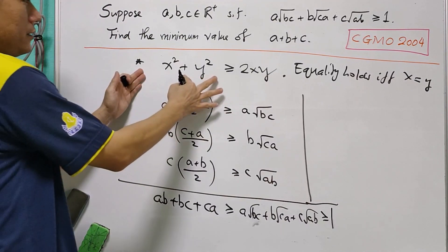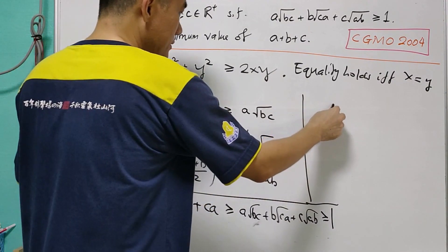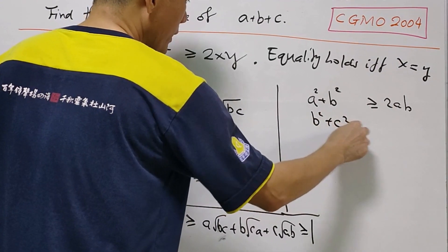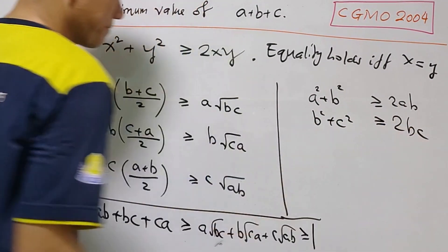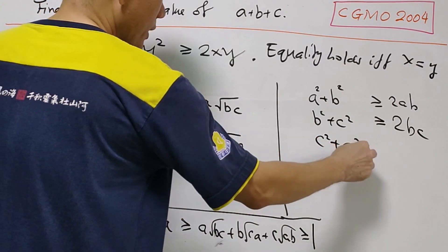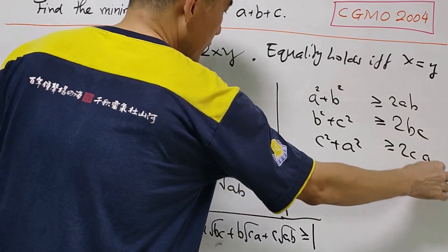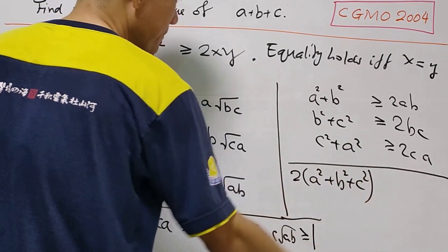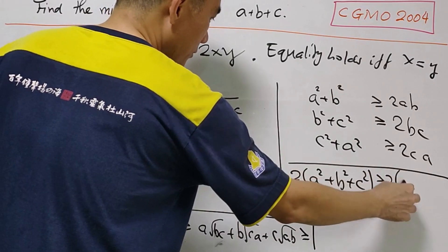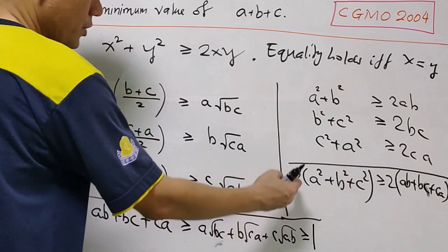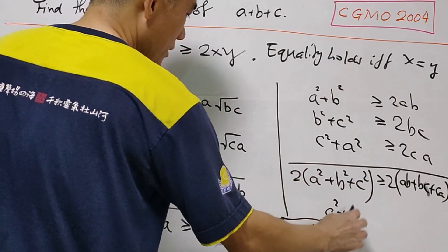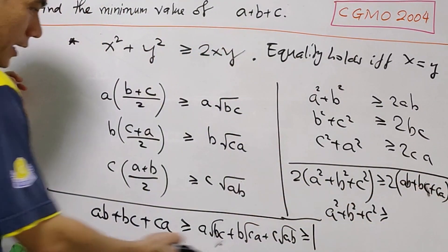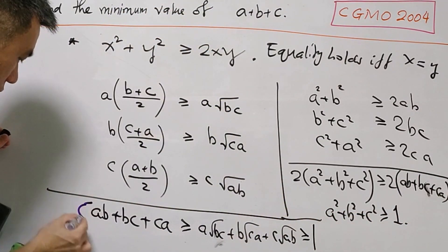Now we use the AM-GM inequality again to get something more. We have A squared plus B squared greater than or equal to 2AB, B squared plus C squared greater than or equal to 2BC, and C squared plus A squared greater than or equal to 2CA. When you sum everything up, we get 2(A² + B² + C²) greater than or equal to 2(AB + BC + CA). Cancelling the 2, we have A squared plus B squared plus C squared greater than or equal to AB plus BC plus CA, which is greater than or equal to 1.